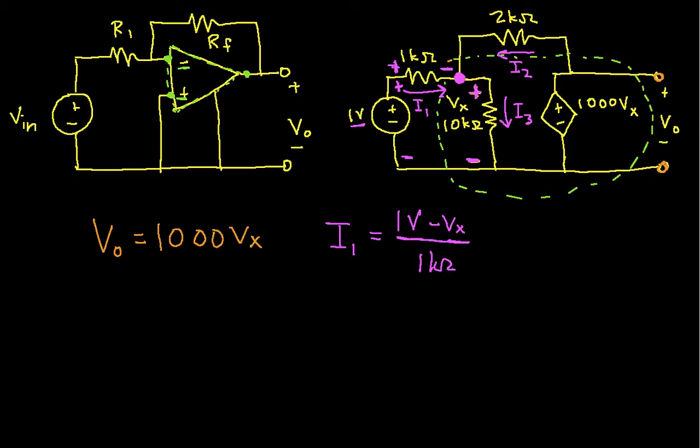Let's see if we can now find I2. The way I can do this is I can see that the voltage from this point to this point is Vout. The voltage from this point to this point is Vx. And so, the voltage across this 2k ohm resistor is Vout minus Vx. So I can write this as Vout minus Vx over 2k ohms. But I know that Vout is 1000 times Vx.